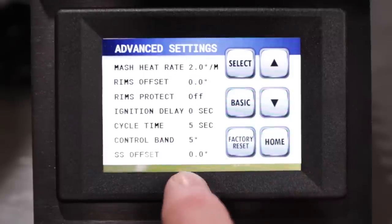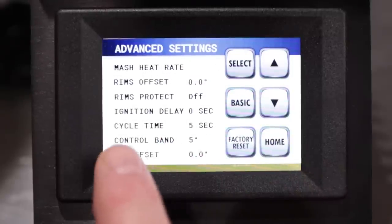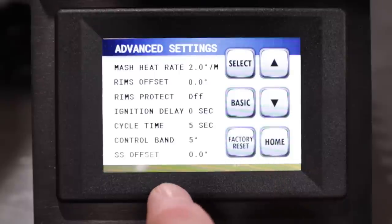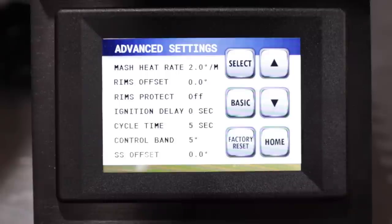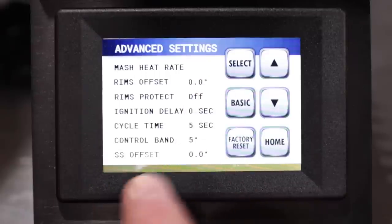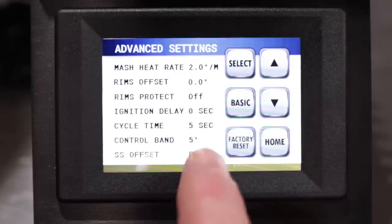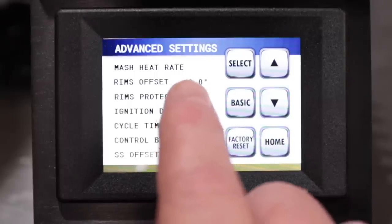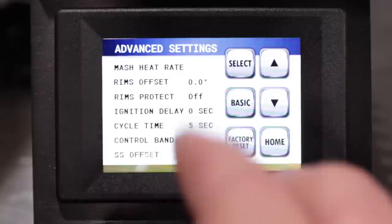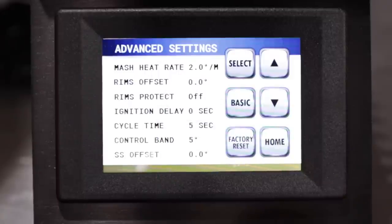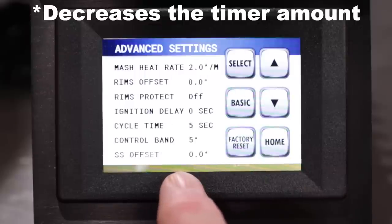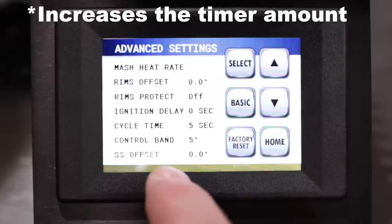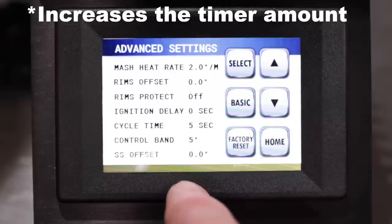What the system does is it actually predicts how long it's going to take for that mash rise or a ramp. In order to dial this function in, you'll need to brew on your system a couple of times using the device. If you find that your ramp in temperature is occurring quicker than what the setting is, so if you reach 150 before the timer goes off, you can write those figures down and adjust this. If you raise the heat rate on this particular setting, it will make the timer go faster in the ramp setting. If you lower the figure, it will make the timer go slower.